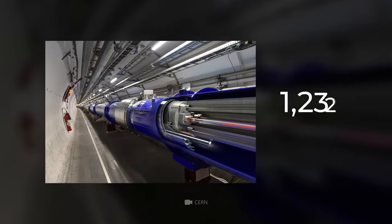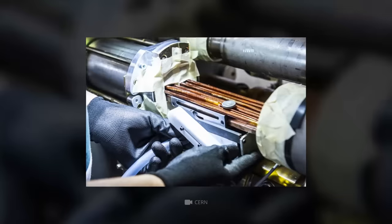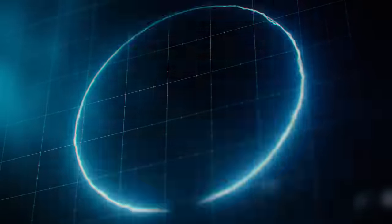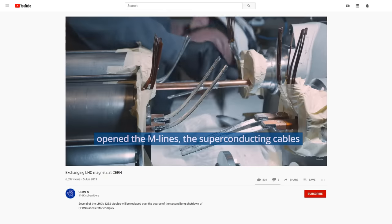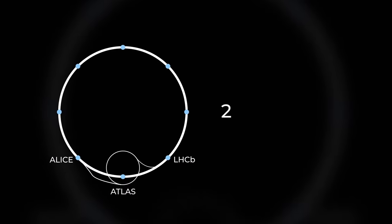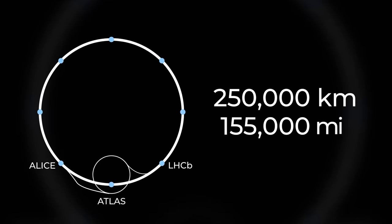1,232 main magnets are connected to the pipes. Their task is to accelerate protons to a speed close to the speed of light, and then hold this stream so that the particle beams don't crash into the wall. In order for the magnets to work, they're powered by superconductive cables with a total length of about 250,000 kilometers, or about 155,000 miles.